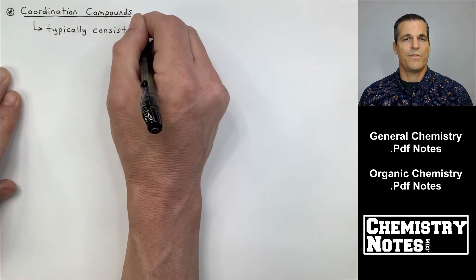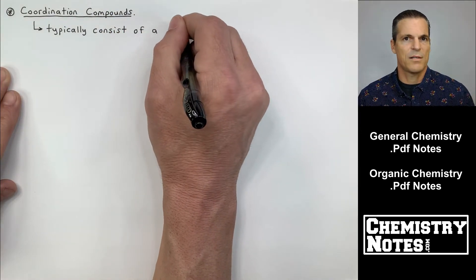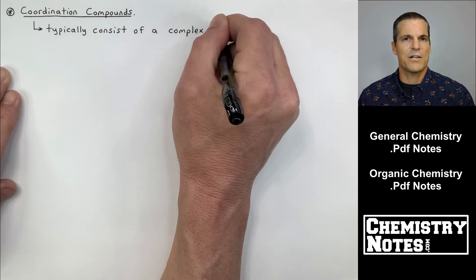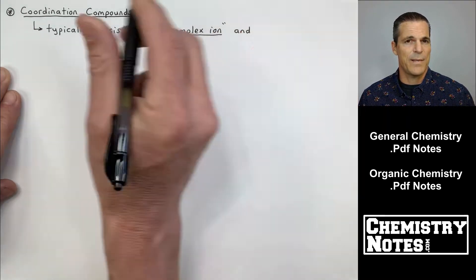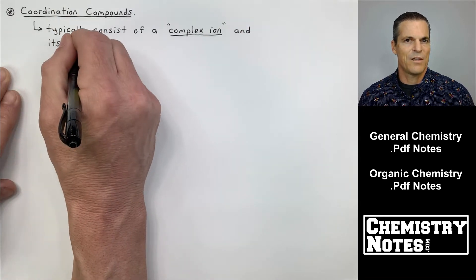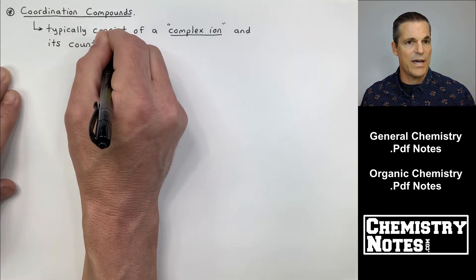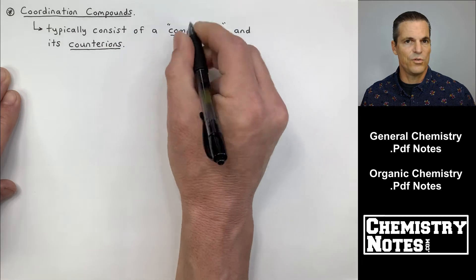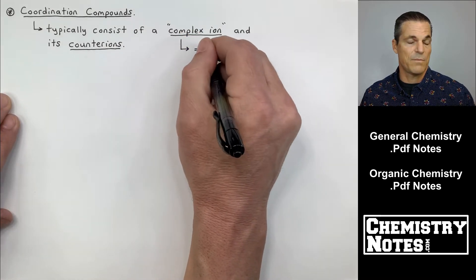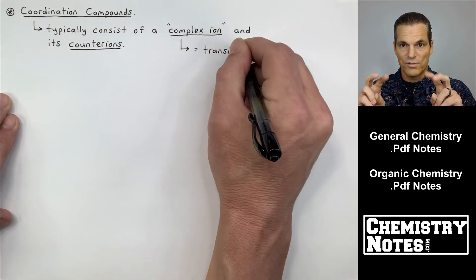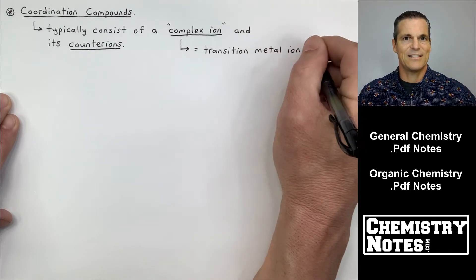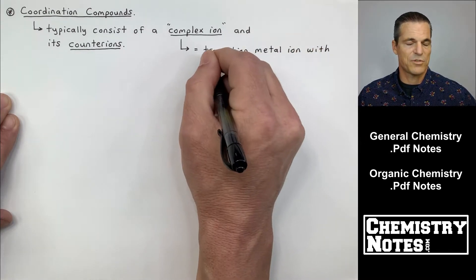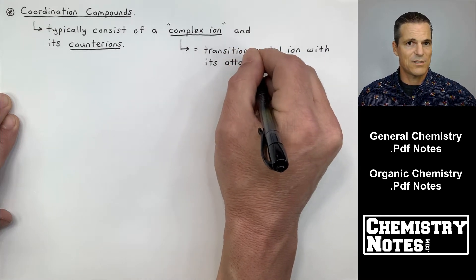So the first two videos we reviewed transition metals, we just kind of rehashed some of the stuff that we've learned in the past, important things that are kind of good to keep in the back of our mind as we start this new stuff in video number three. What do I mean by new stuff? Coordination compounds, complex ions, ligands, and just coordination chemistry in general. So let's get started.